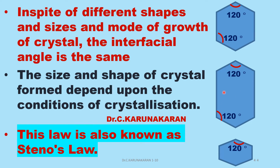Depending upon the conditions and medium of crystallization, the size and shape will vary. For example, this is a hexagonal system of the same substance. In spite of different shapes, sizes, and modes of crystallization, the interfacial angle is the same. If the crystals are microcrystalline — crystallized very fast — or crystallized slowly with a different shape, the interfacial angle remains constant.